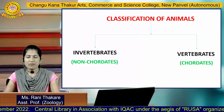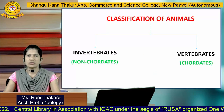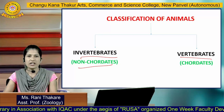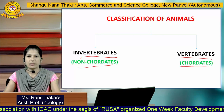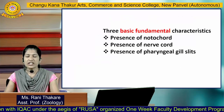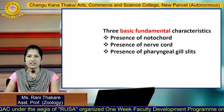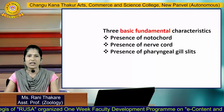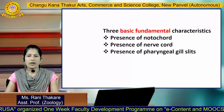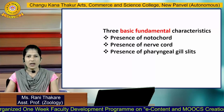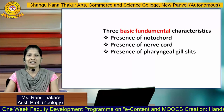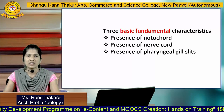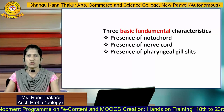Animals are mainly classified into two groups: invertebrates, also known as non-chordates, and vertebrates, also known as chordates. The three basic fundamental characteristics on which animals are classified into these two groups are: presence of notochord, presence of nerve cord, and presence of pharyngeal gill slits.